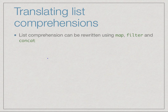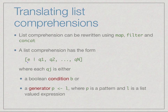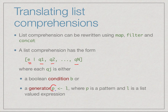List comprehensions are essentially just syntactic conveniences — not a fundamental concept, but a more readable format for writing map and filter, very similar to set theory notation. You can formally translate any list comprehension using map, concat, and a version of filtering. A list comprehension has an output expression generated by a bunch of input conditions, where each condition is either a boolean guard or a generator with a pattern.